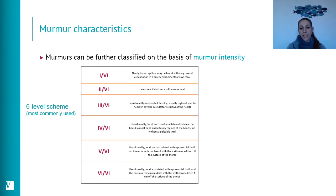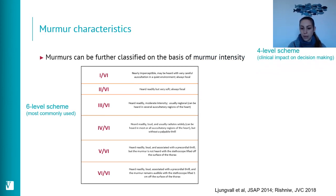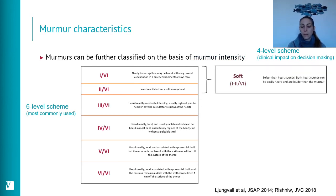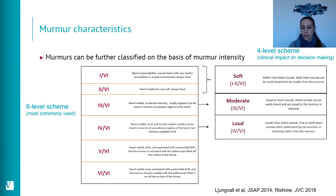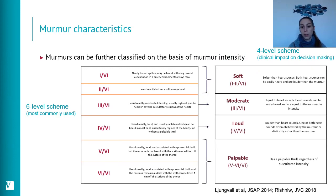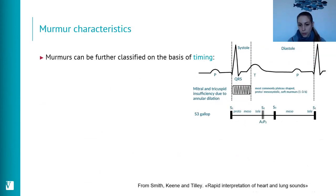A four-level scheme has also been proposed and validated. Grades 1 and 2 are grouped as soft; grade 3 is moderate; grade 4 is loud; and grades 5 and 6, where a precordial thrill is required, are grouped as palpable murmurs. This scheme has been used in different clinical studies.